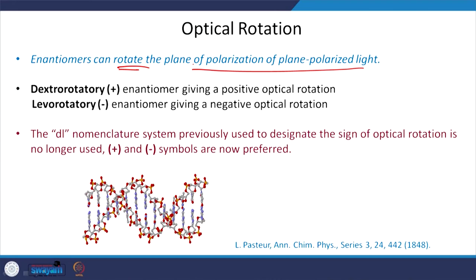If the enantiomer gives positive rotation, it is called dextrorotatory (denoted by +): if the initial angle θ₁ increases to θ₂, it is dextrorotatory. If θ₂ is smaller than θ₁, it is called levorotatory. Previously the terms d-rotatory and l-rotatory were used but that nomenclature is now outdated. DNA, for instance, is a chiral molecule and can rotate different polarizations by different angles — from this you can calculate the circular dichroism.